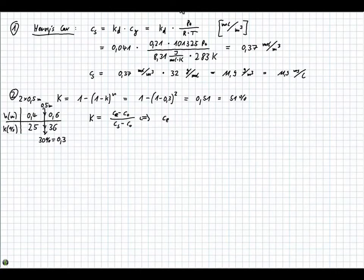If we rewrite this formula because we want to have CE, the concentration after aeration, then we get CE equals K times (CS minus C0) plus C0.